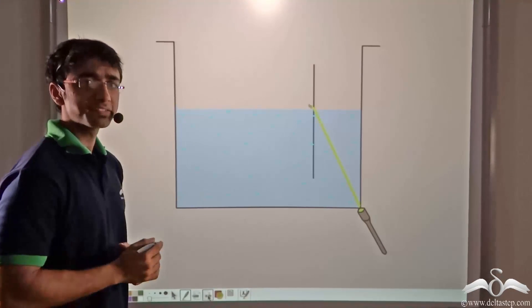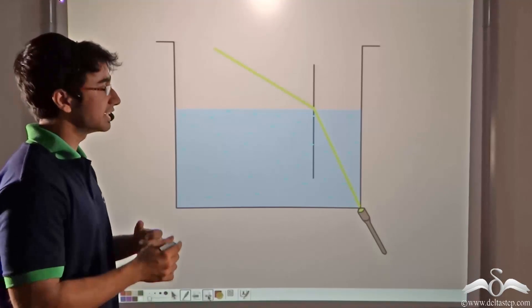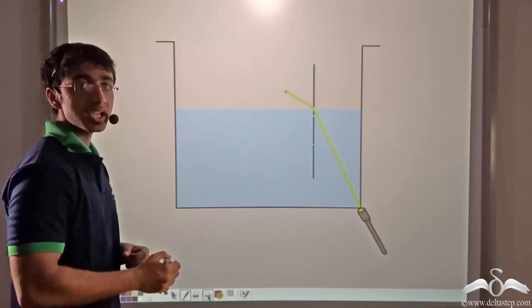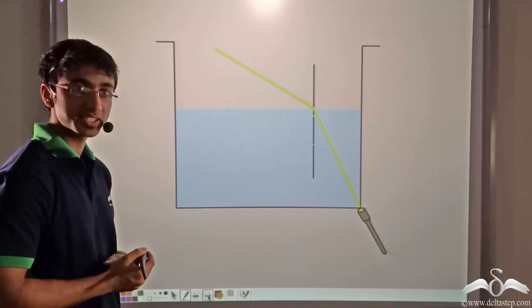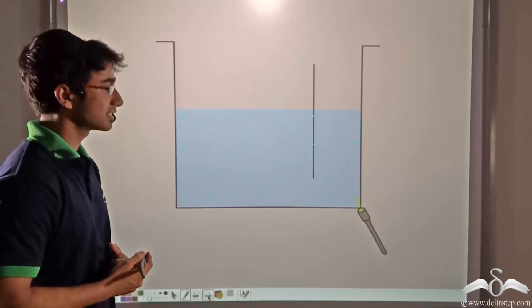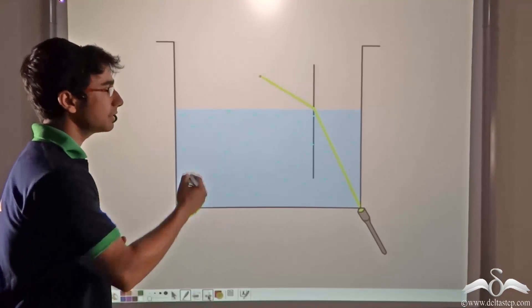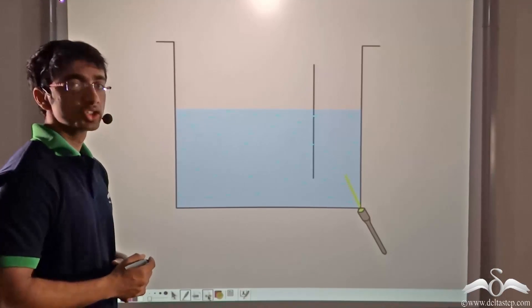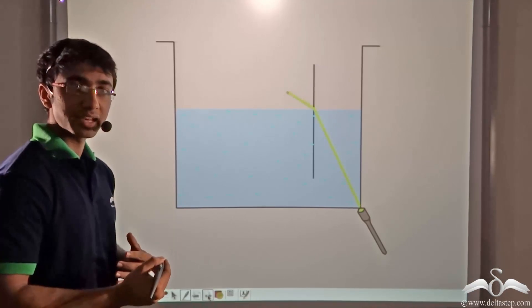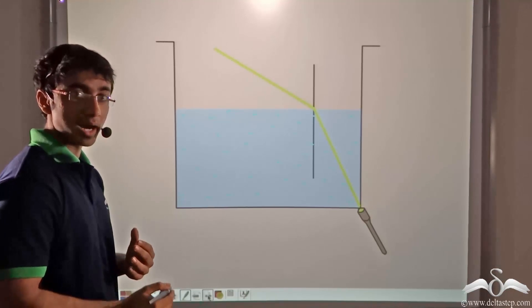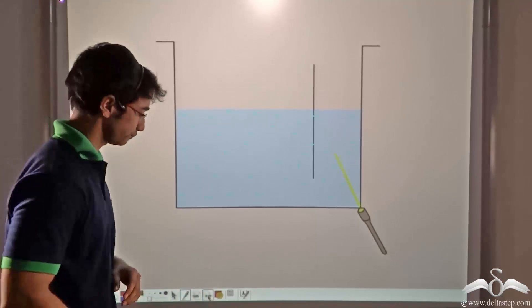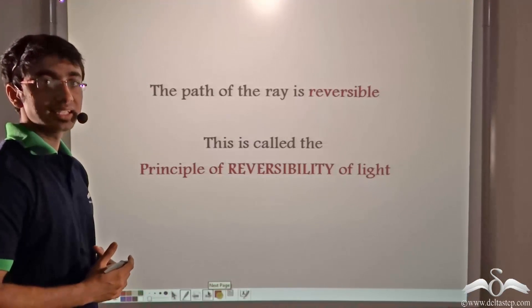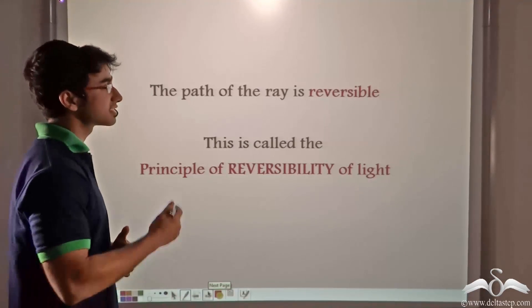The only difference is that in the previous case, the rays were travelling in the downward direction — from air to water after refraction at the air-water interface. And in this case, the rays are travelling from water to air after refraction at the water-air interface. So we see that the path of light has been reversed, but the path remains the same.